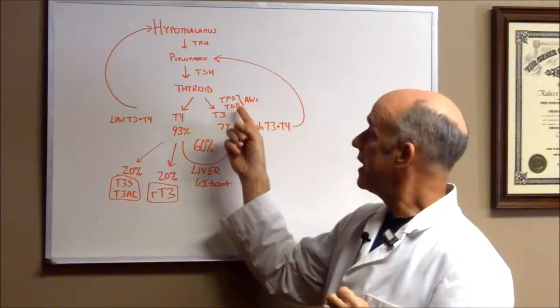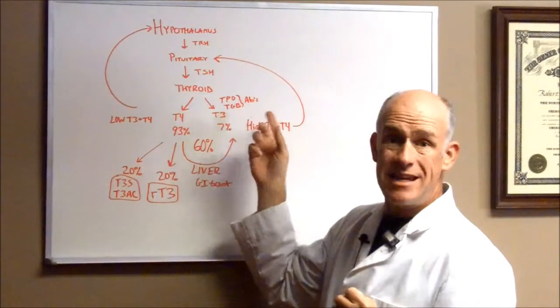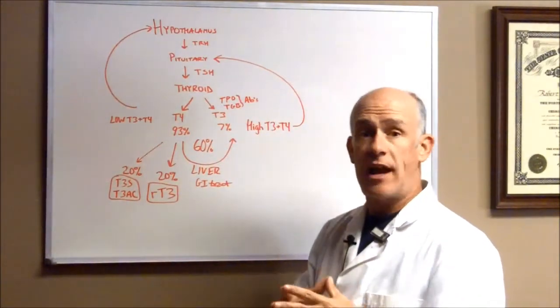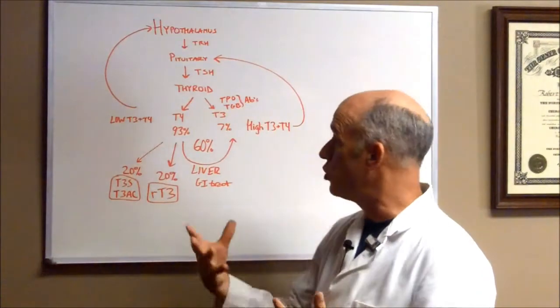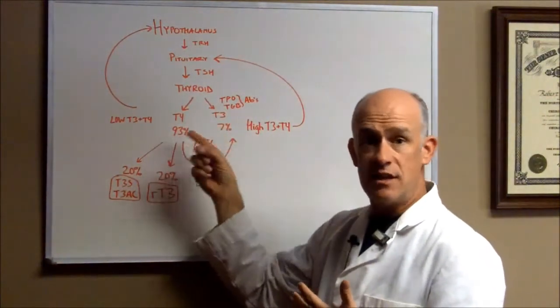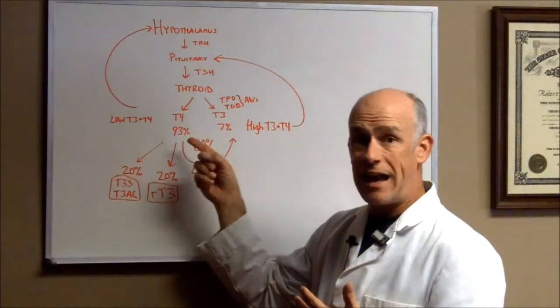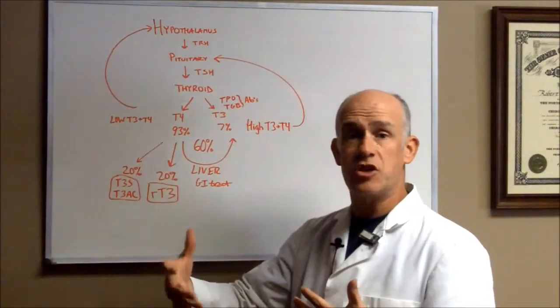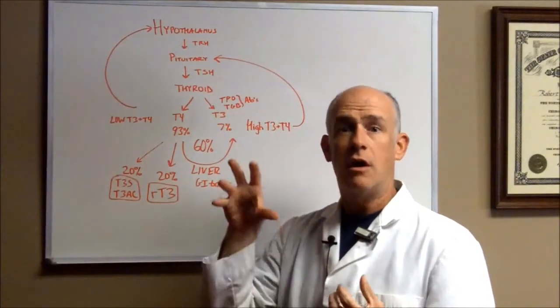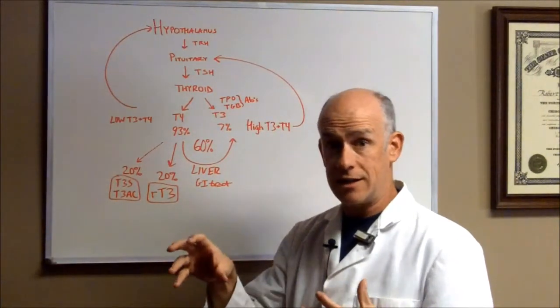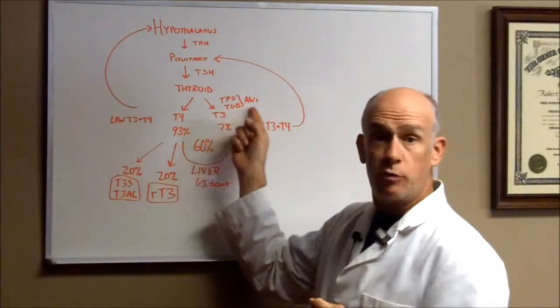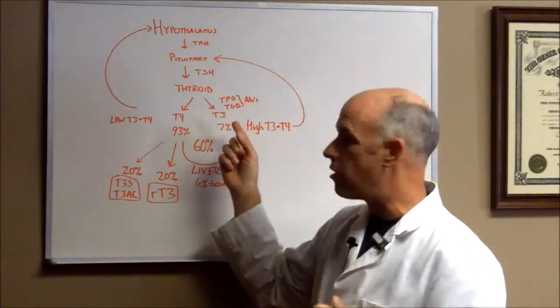Another thing that needs to be checked for is TPO and TGB antibodies, thyroid peroxidase and thyroid globulin antibodies. These are antibodies that your immune system can produce that prevents your thyroid from producing normal T4 and T3. And if that happens, that's an autoimmune thyroid condition. It's called Hashimoto's. It's the number one cause of hypothyroid in the United States. In the world, it's the number one cause of hypothyroid.